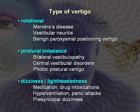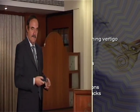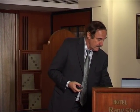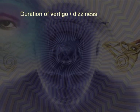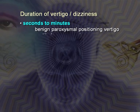To summarize types of vertigo: Meniere's, vestibular neuritis, BPPV, postural imbalance, vestibulopathy, and somatoform disorders form a large group of vestibular and non-vestibular disorders. Regarding duration: seconds to minutes corresponds to BPPV, vestibular paroxysmia, and perilymph fistula.